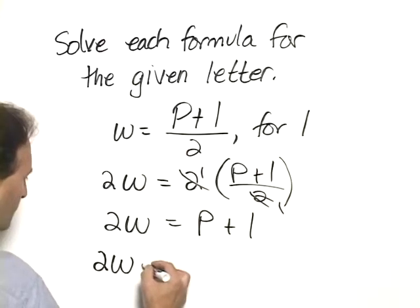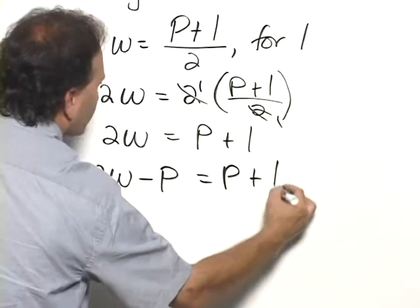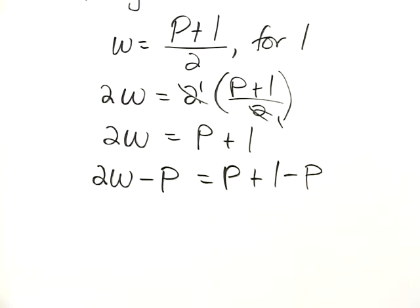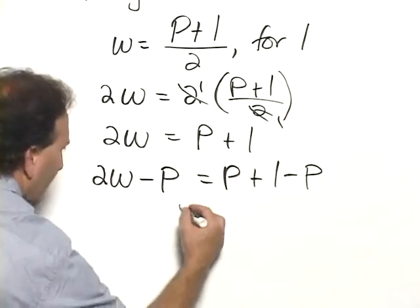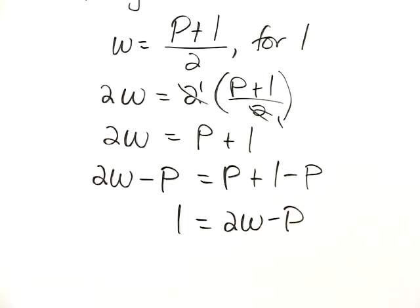So 2W minus P is equal to P plus L minus P. And of course on the right hand side P minus P is zero. We have just L is equal to 2W minus P.